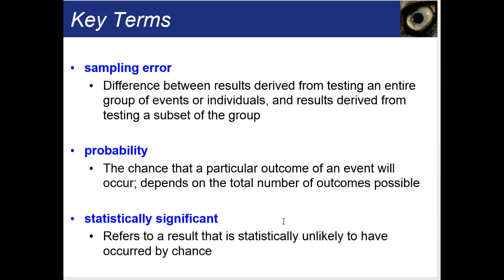A sampling error is a difference between results derived from testing an entire group versus results from testing a subset. Probability is the chance that a particular outcome will occur — it depends on the total number of outcomes possible. For example, if I flip a coin, there are only two outcomes possible — heads or tails — so there's a one-out-of-two chance of getting heads. Statistically significant refers to a result that is statistically unlikely to have occurred by chance.